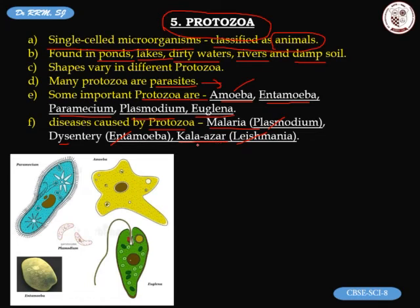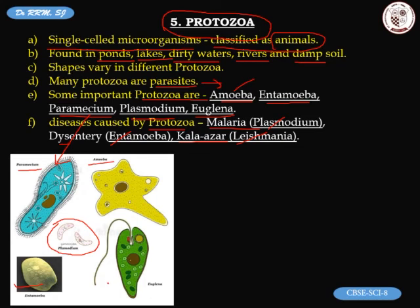Paramecium has a typical shoe shape. Amoeba you have been drawing since middle school. Entamoeba causes dysentery. Plasmodium is the malarial parasite. Euglena has a flagellum. These images help you easily remember and identify each protozoan.